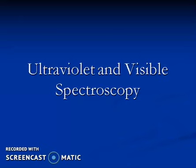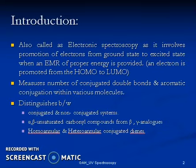UV-visible spectroscopy is also known as electronic spectroscopy. As we discussed in the basic introduction to electromagnetic radiations, it involves electrons responding to incoming electromagnetic radiation. The energy involved here is highest compared to rotational and vibrational changes — electronic transitions require more energy than vibrational, rotational, or translational energy changes.